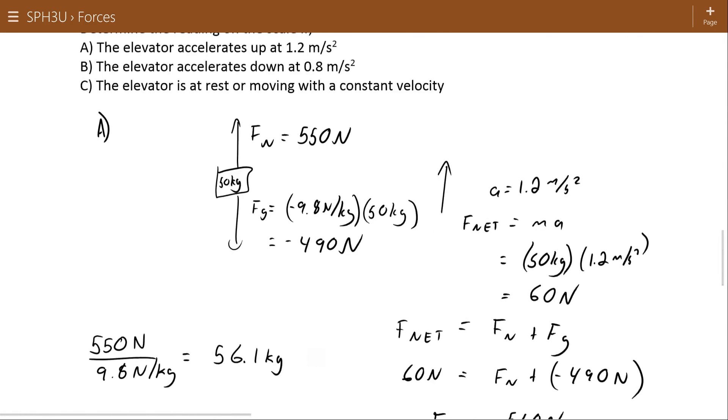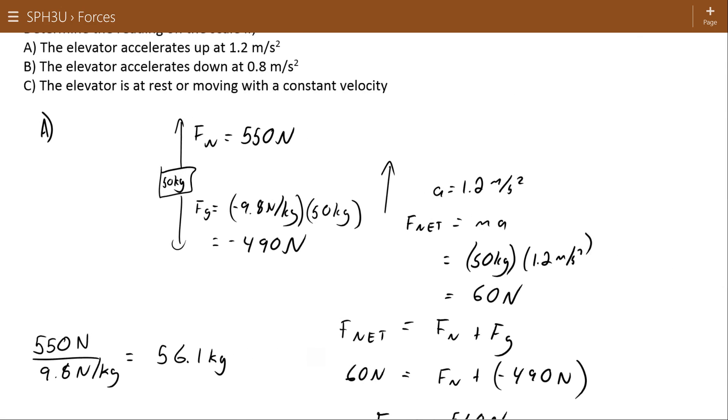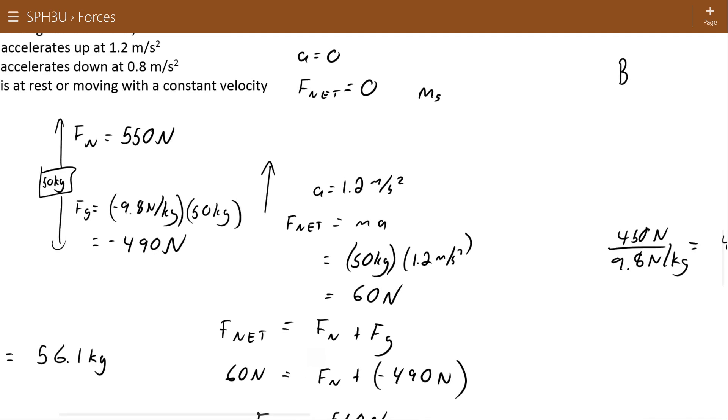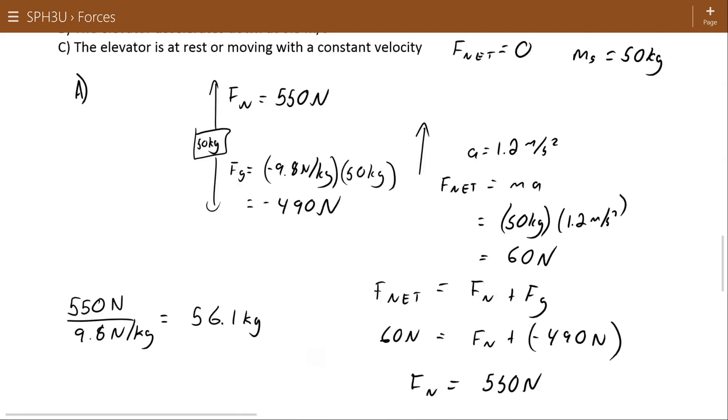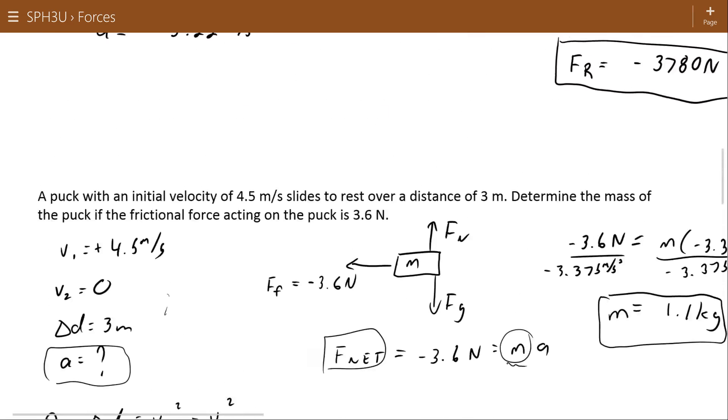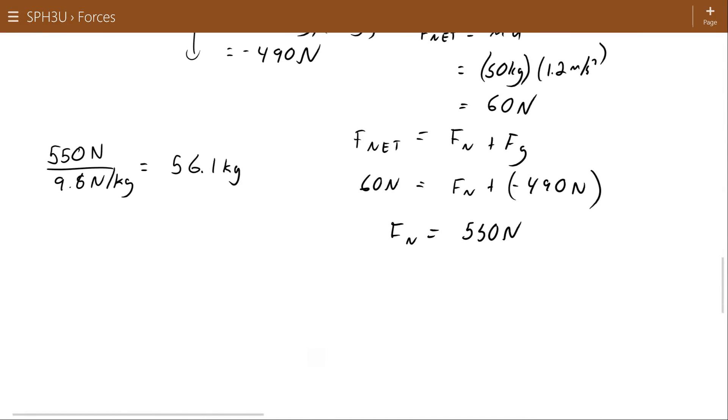Last question here. The elevator is at rest or moving with a constant velocity. That means that Newton's first law applies that the acceleration is zero, which means the net force is zero, which means the mass on the scale is pushing in exactly the situation it expects to be pushing. And so if you weigh 50 kilograms and your scale is correct, then it's going to say that it's going to push back with a 50 kilogram or 400 newton normal force.